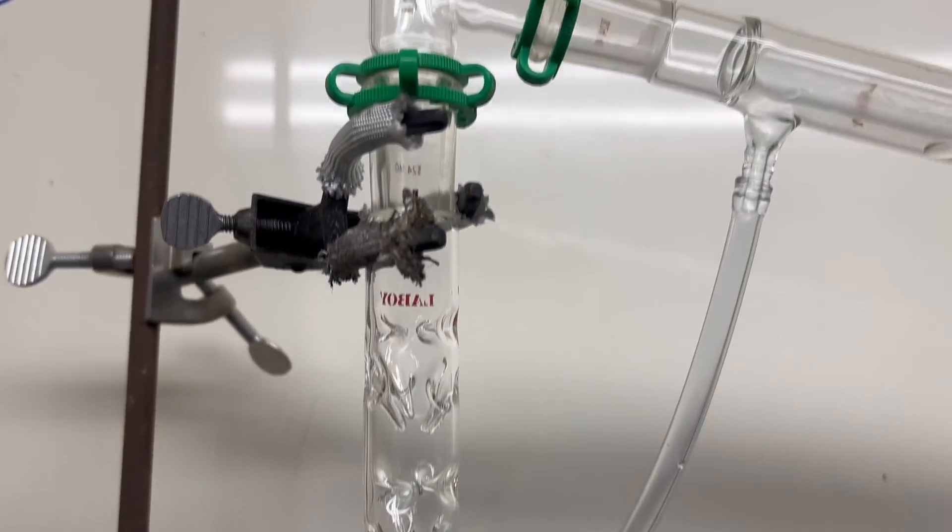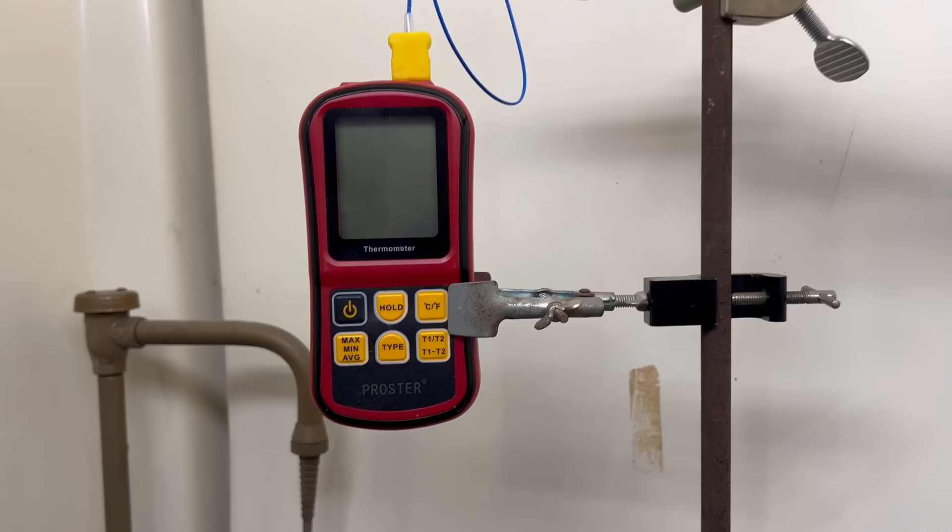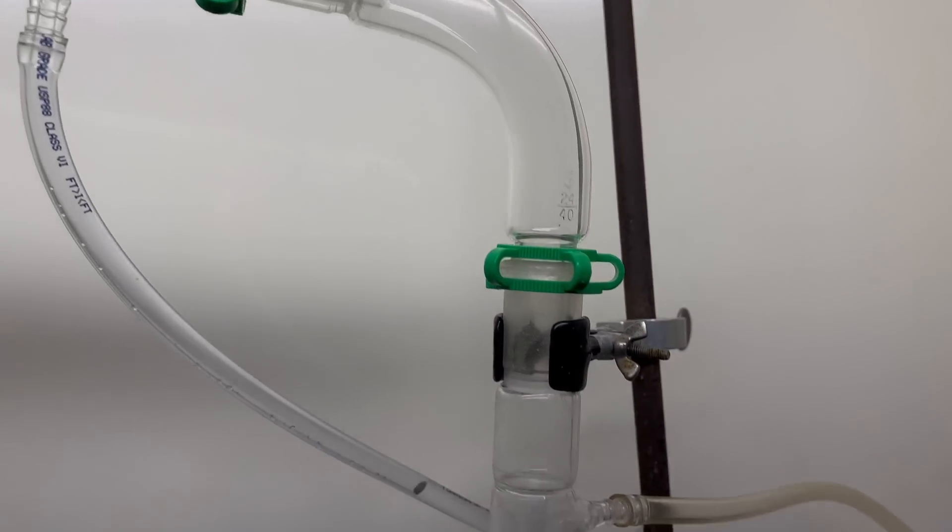Above the column, before the condenser sits a temperature probe, this gives the current temperature of the distillate coming over. We are looking for about 170 degrees Fahrenheit, 76 degrees Celsius, for carbon tetrachloride.